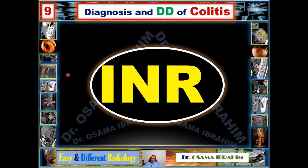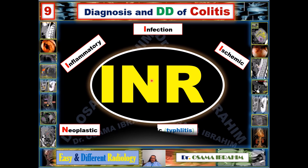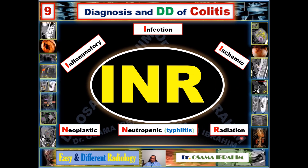The causes can be remembered using the mnemonic word INR. I refers to the three main causes starting with that letter: Inflammatory, Infectious, and Ischemic — these are the most common causes of colitis. N refers to Neoplastic and Neutropenic (typhlitis). R refers to Radiation. This mnemonic covers the main causes of colitis, which can be narrowed down based on patient history and the site of involvement.